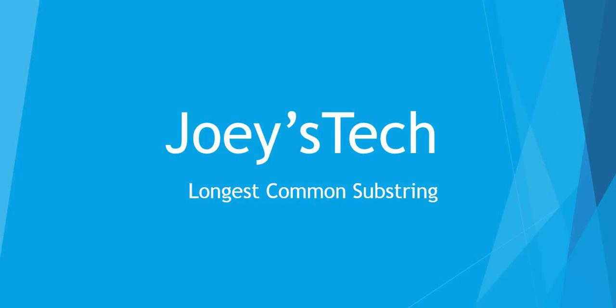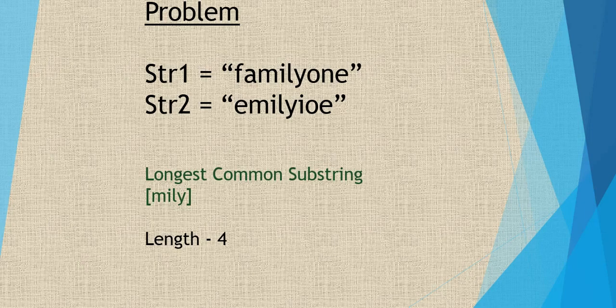Now let's see what the problem is. We have two strings — one is 'family' and the other one is 'Emily IOE'. We need to find the longest common substring. As you can see, the longest common substring is displayed on the screen and it is 'MILY', with a length of 4.